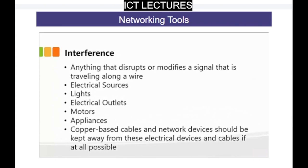Interference refers to anything that disrupts or modifies a signal traveling along a cable wire. Electrical sources such as lights, outlets, motors, and appliances — anything run on electricity near your UTP cable — will cause not only interference but also attenuation. Copper cable and network devices should be kept away from these electrical devices, which is why we typically see network cables, devices, and patch panels kept separately from electrical devices.